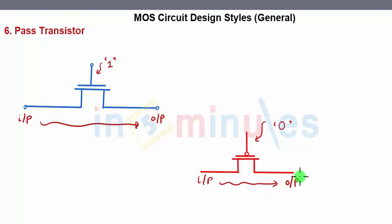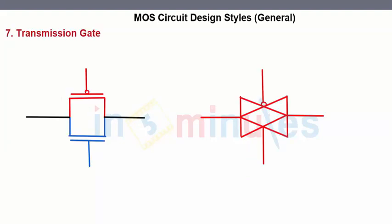An NMOS transistor, we have seen this in the previous clips, an NMOS transistor cannot pass a perfect 1, whereas a PMOS transistor cannot pass a perfect 0. So to avoid this problem, what we study is a new style and that's nothing but transmission gates.